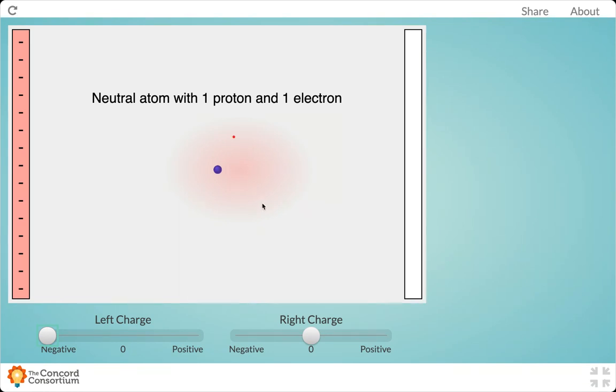Why would that happen? Well, if we think about it, we have a negatively charged plate and negatively charged electrons. They are going to repel each other, which is why we see this shift in the electron cloud away from that charged plate.